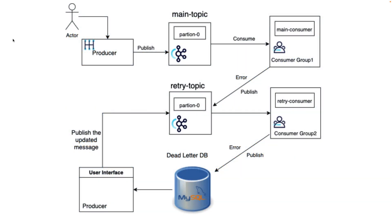In this diagram we see the actor — the one who is actually generating the event — and a producer which is producing messages to a main topic, and there is a consumer which is listening to this main topic. In case of successfully consuming a message, the main consumer will do all the business logic and process that message.